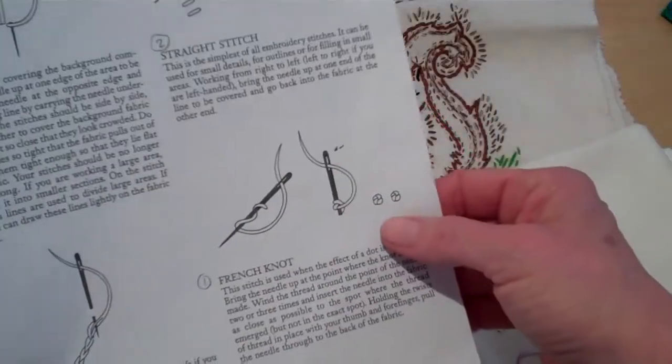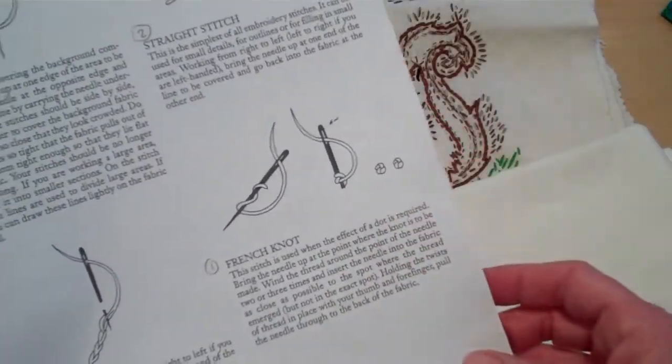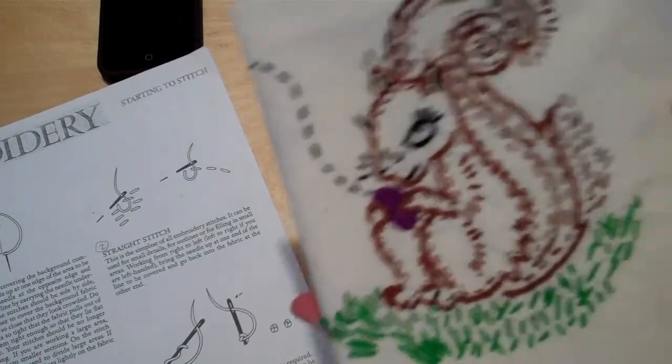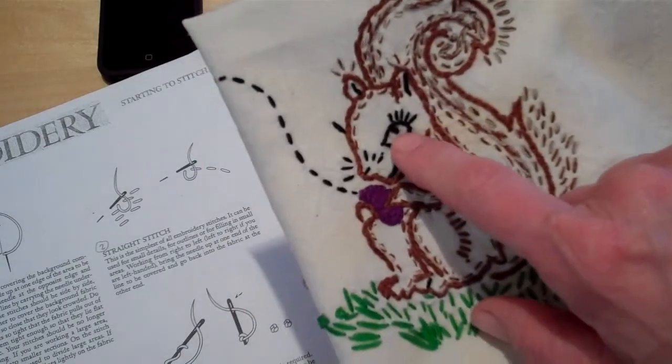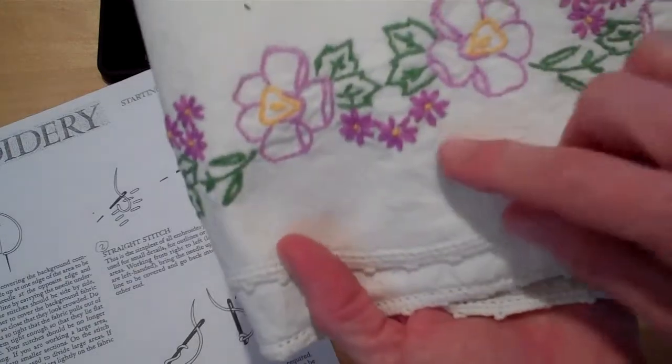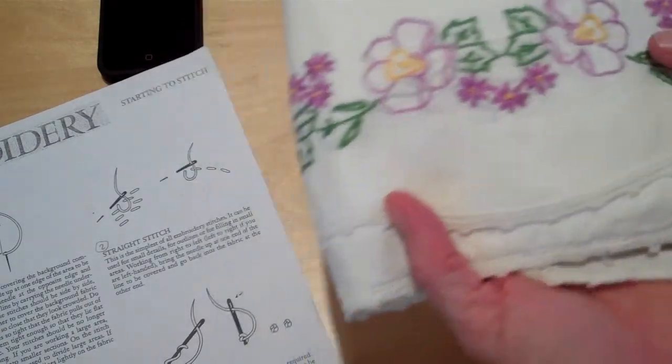The first stitch on your sampler will be the French knot. It's used to create when you need a dot-like effect. It could be like an eye. You would make a little dot like that. If you wanted to make the center of a flower, you would use a French knot.